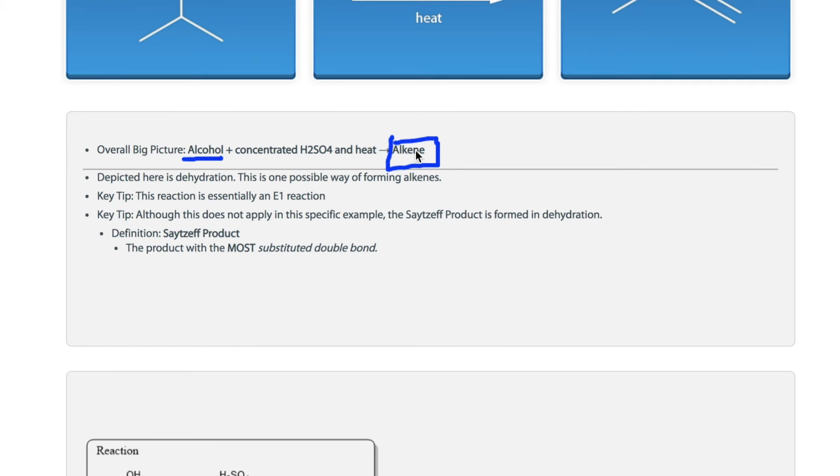When considering the regioselectivity of a reaction, remember that the Zaitsev product is usually formed, which means that when you choose which alpha carbon proton to remove to make the product, choose the alpha carbon proton that will make the most substituted double bond.